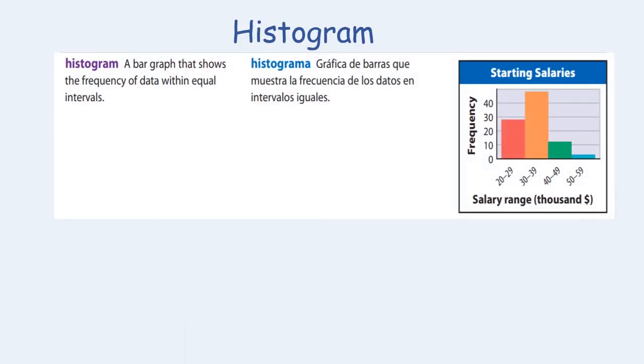The next data display we're going to look at is a histogram. A histogram is a bar graph that shows the frequency of data within equal intervals.